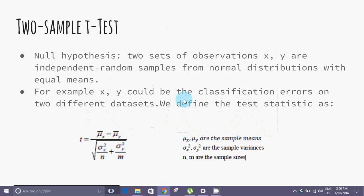Two sample t-test. Null hypothesis: Two sets of observations are independent random samples from normal distributions with equal means. For example, X and Y could be classification errors on two different data sets.